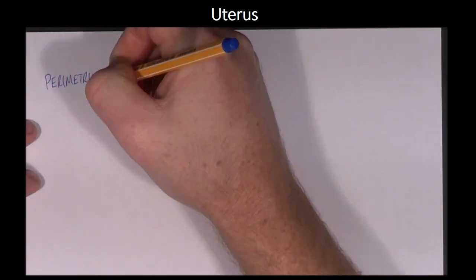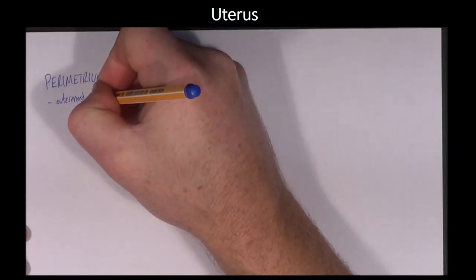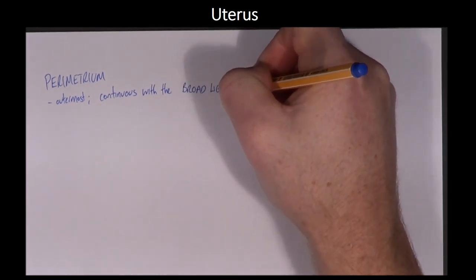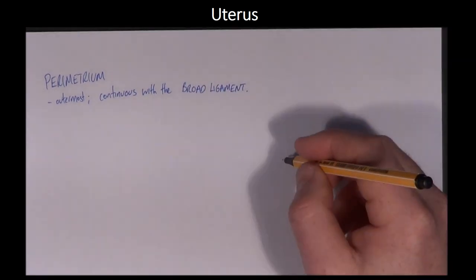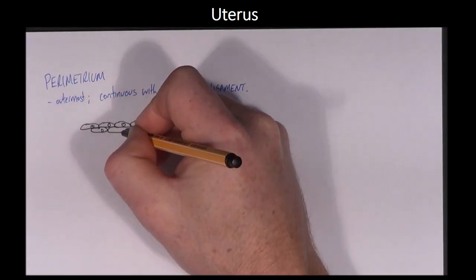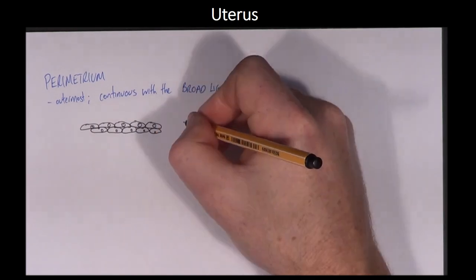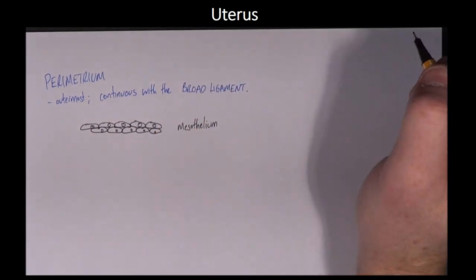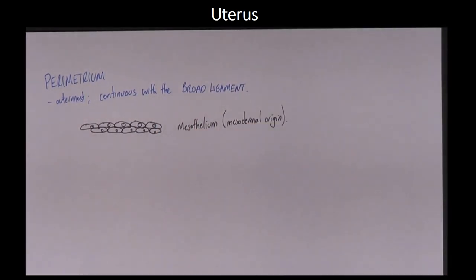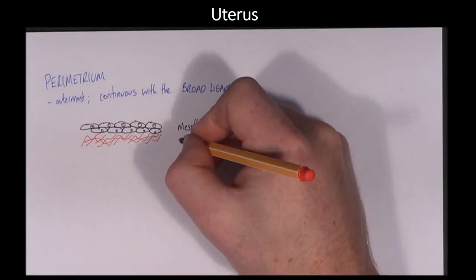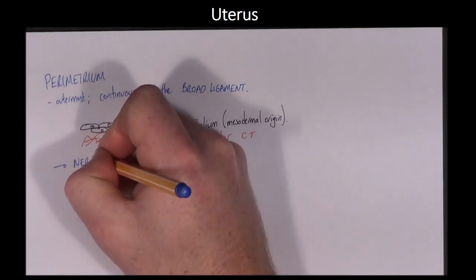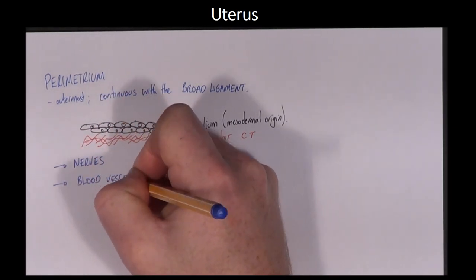The perimetrium is the outermost layer and is continuous with the broad ligament. The perimetrium consists of layers of simple squamous epithelium, called mesothelium, on top of loose areolar connective tissue. There are many blood vessels, nerves, and lymphatics in the perimetrium.